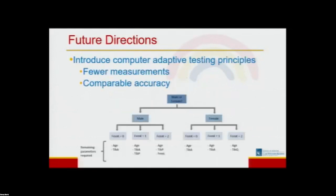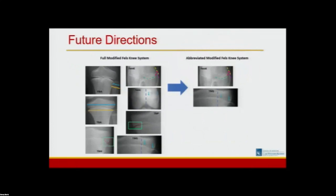We are continuing to build off this work. One way is improving the usability of the modified Fells knee system. A study our group just had accepted for publication in the Journal of Pediatric Orthopedics implemented computer adaptive testing principles to minimize the number of parameters that need to be measured on each patient while maintaining accuracy. So instead of measuring all seven radiographic parameters, which takes an experienced user about a minute and a half, you can measure the two to three most important parameters and get a skeletal age estimate of equivalent accuracy in approximately 30 seconds.